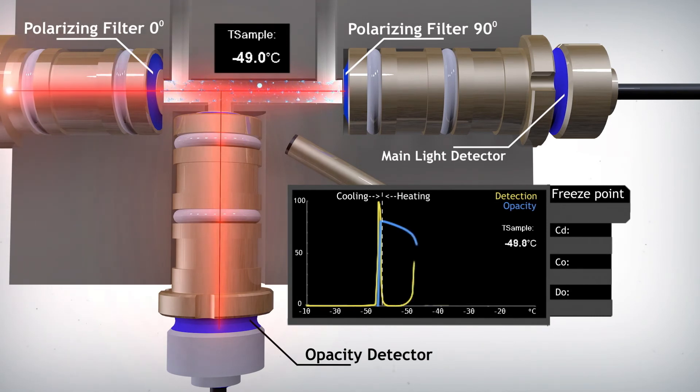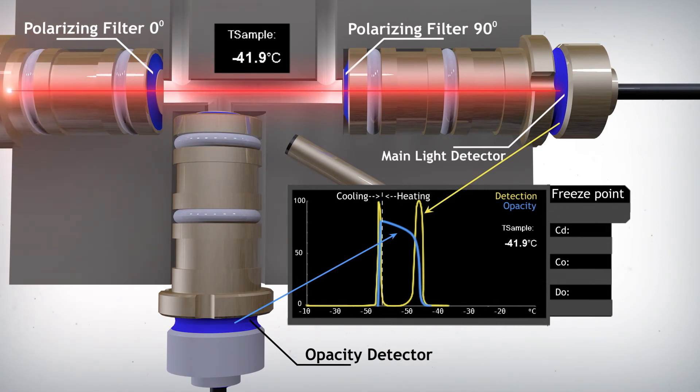This occurs around minus 49 degrees in this example. As more crystals melt, the signal weakens until all the crystals disappear and the signal for both detectors also disappears. The temperature at which the last crystal disappears is called the freezing point. In this example, the freezing point is minus 53.4 degrees Celsius.